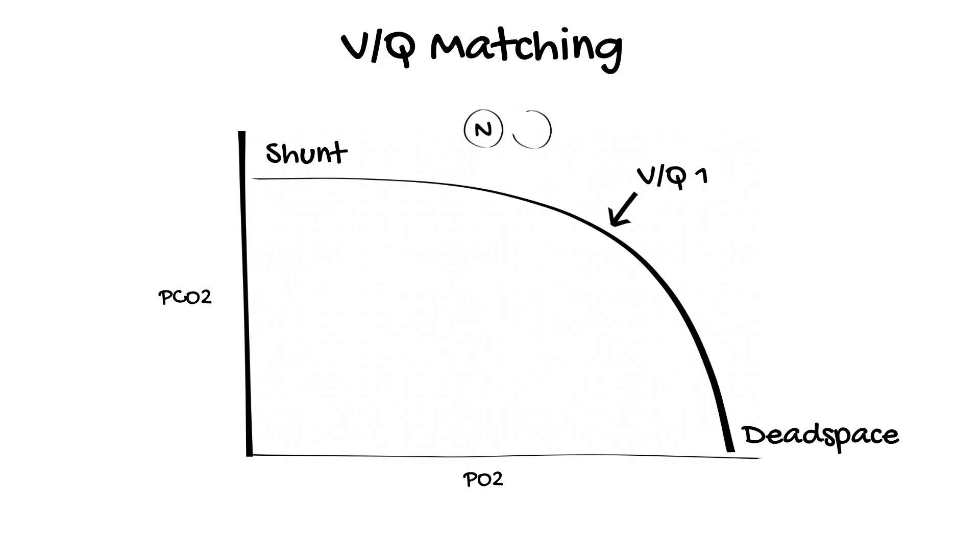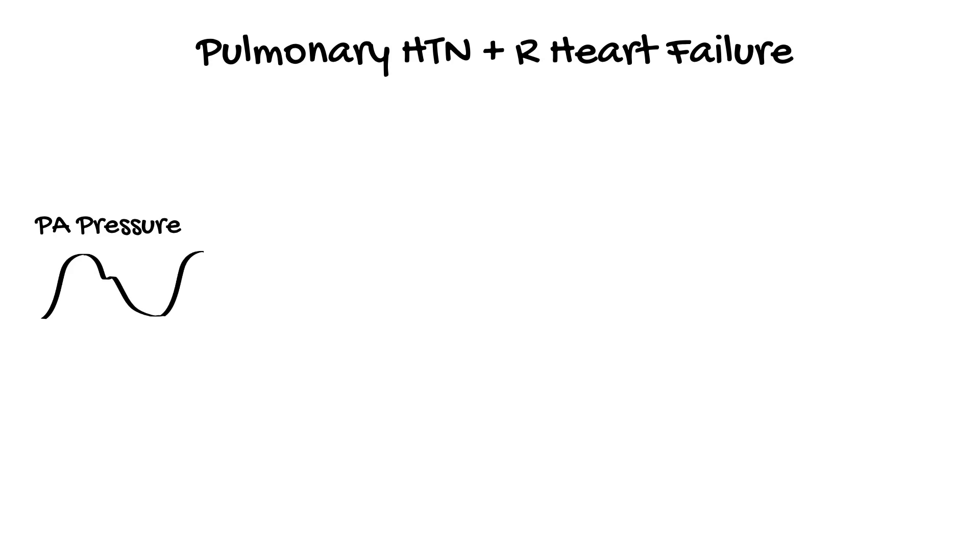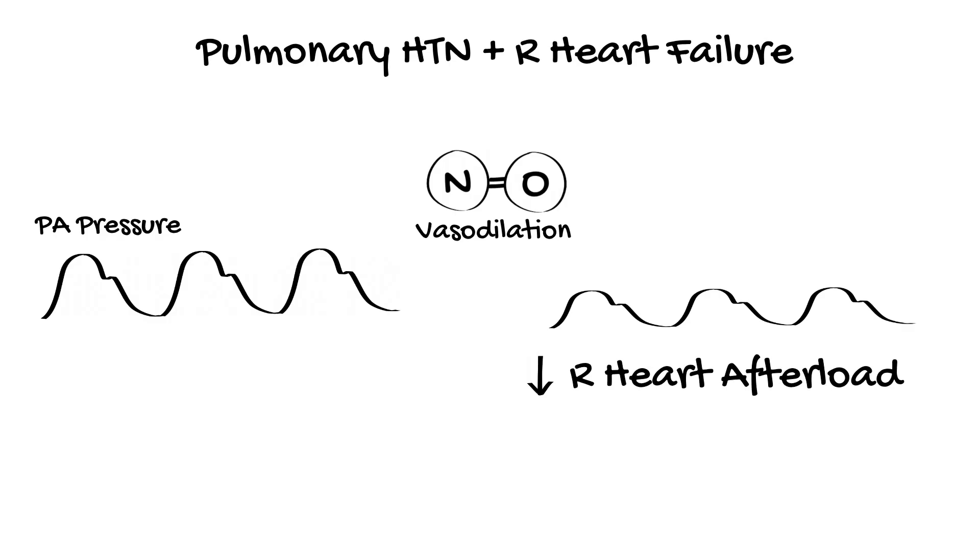The second indication is the treatment of acute pulmonary hypertension and right heart failure. By acting as a potent pulmonary vasodilator, nitric oxide can significantly reduce pulmonary arterial pressure. This reduces the afterload on the right heart, allowing for increased flow through the right heart with lower stroke work and lower oxygen requirements.